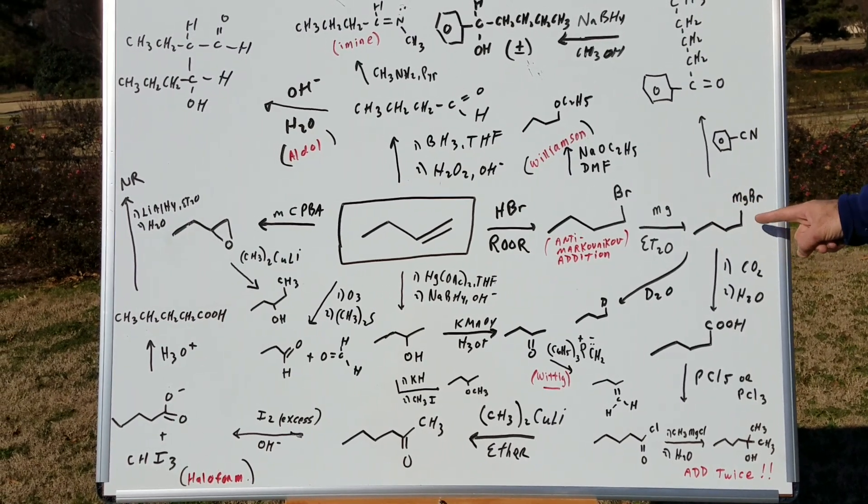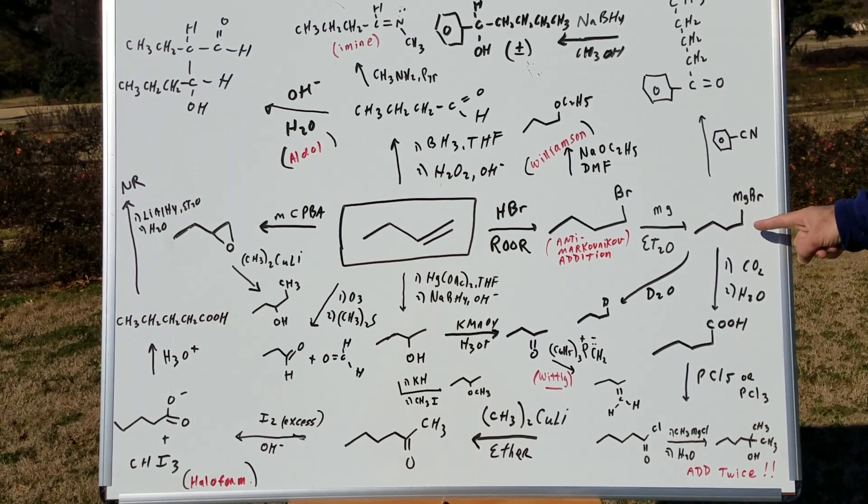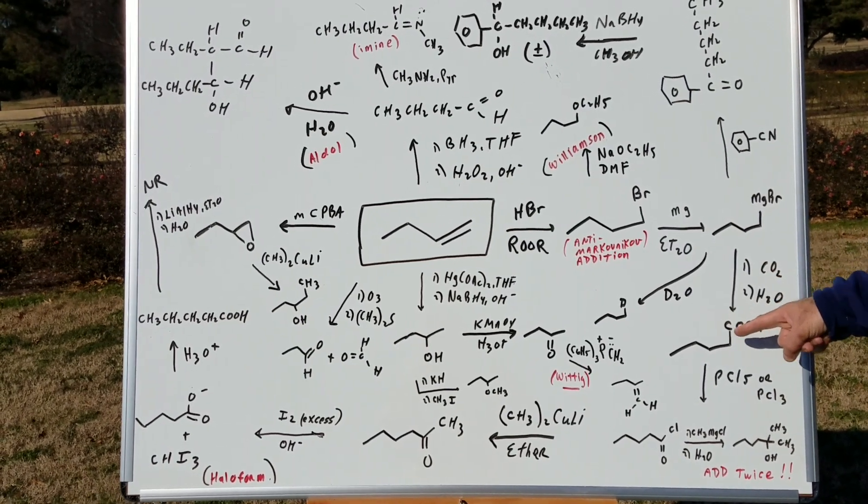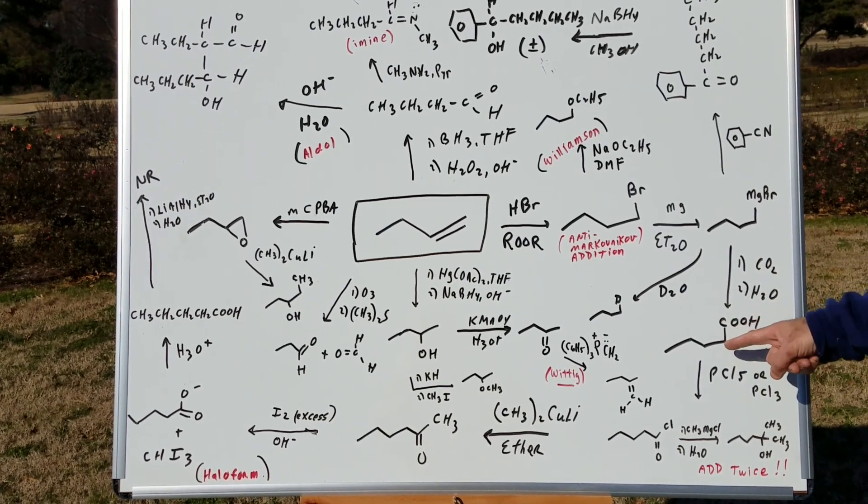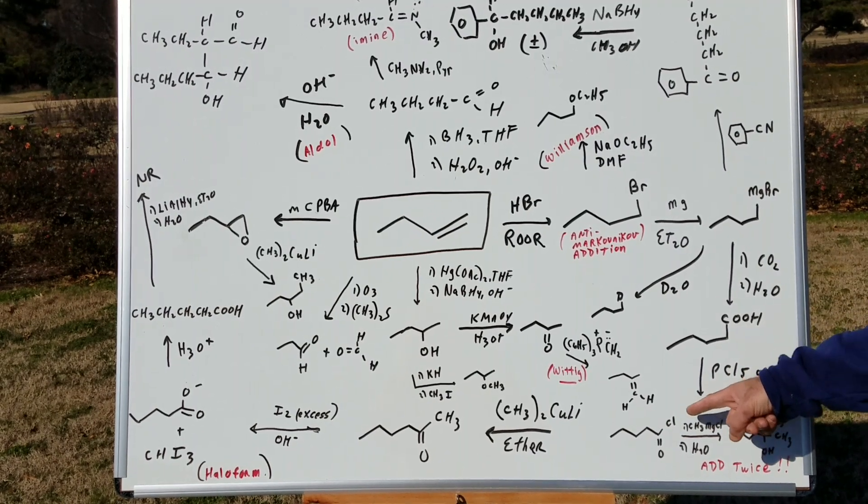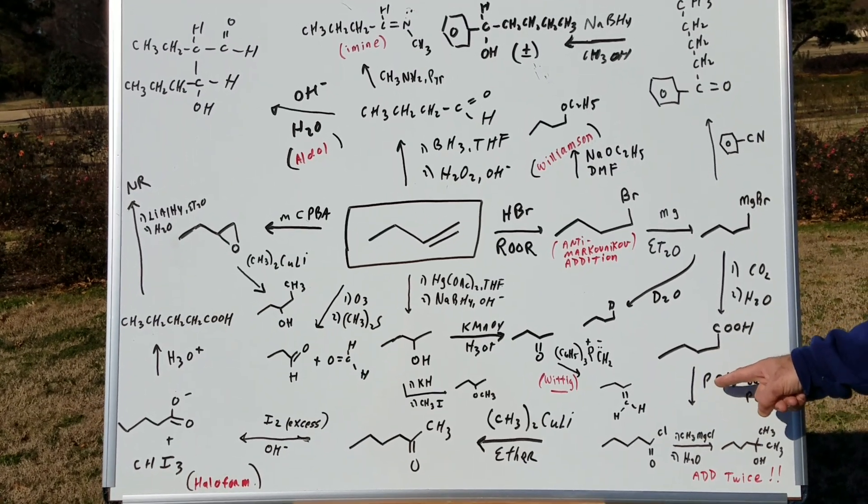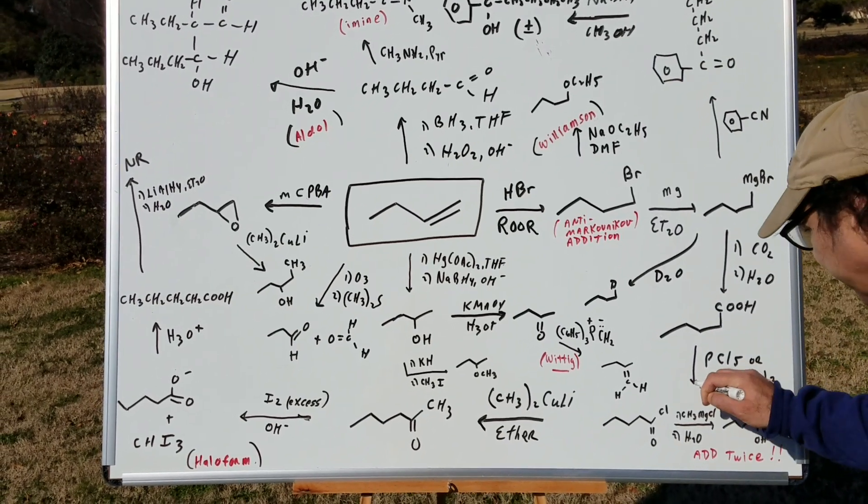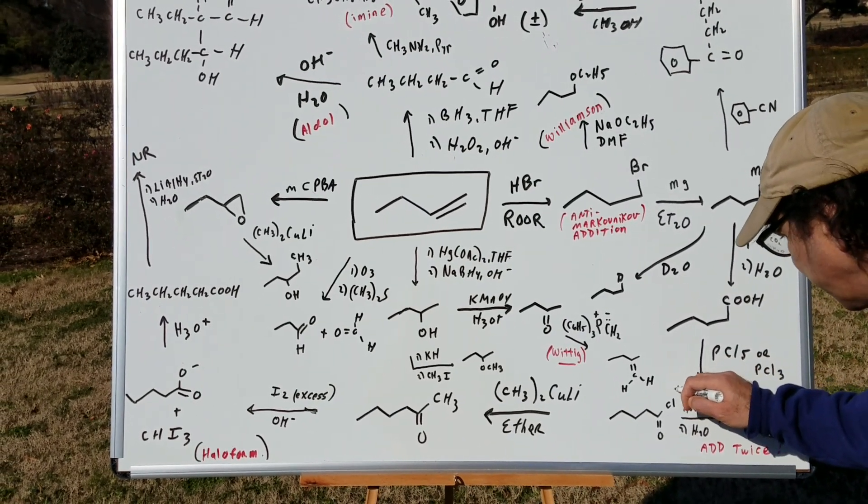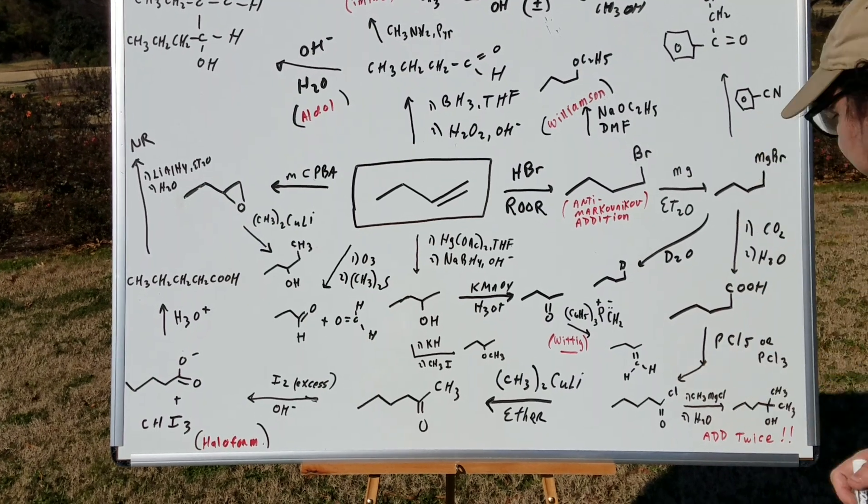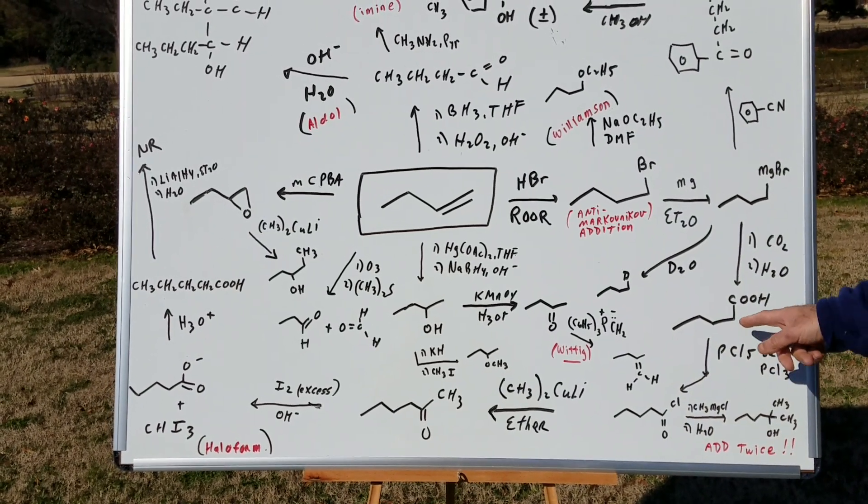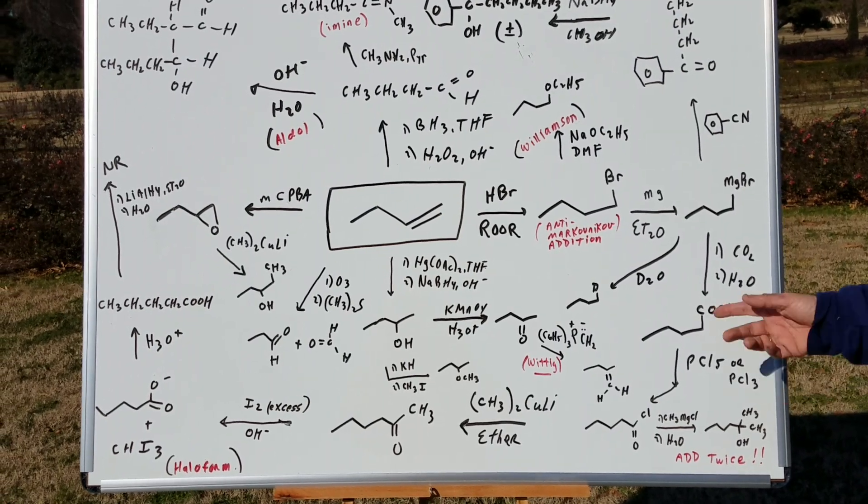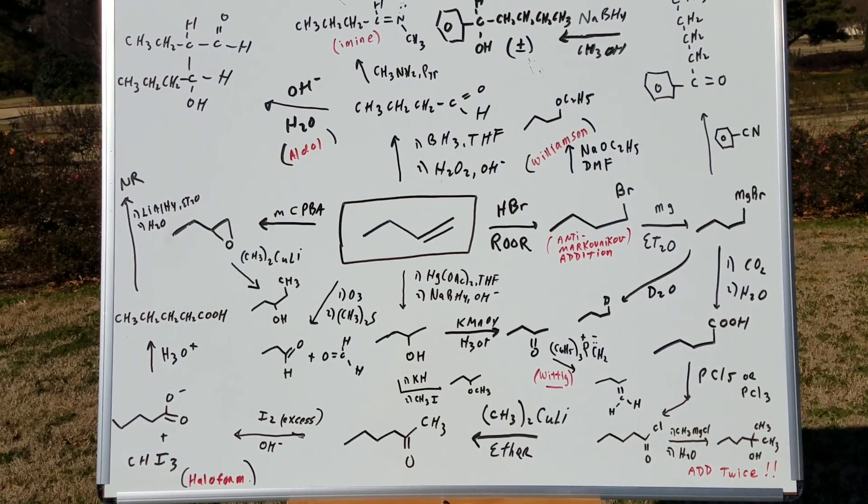If you go back to the Grignard, another really nice reaction is if you treat it with CO2. You carbonate the Grignard to get the carboxylic acid and then you make it into the acyl halide. If you treat this with PCl5, which if I put an arrow, that could have been maybe a little bit looped around, maybe a little bit nicer. So you treat the carboxylic acid with PCl5 or PCl3 or SOCl2. You make the acyl halide.